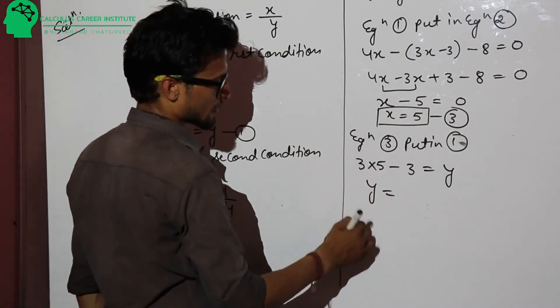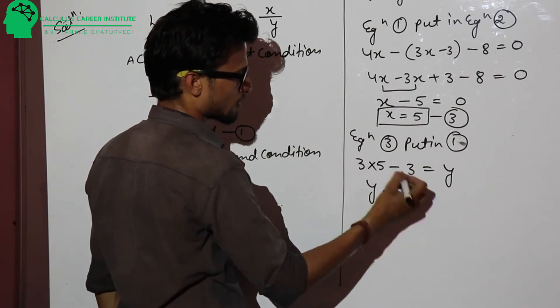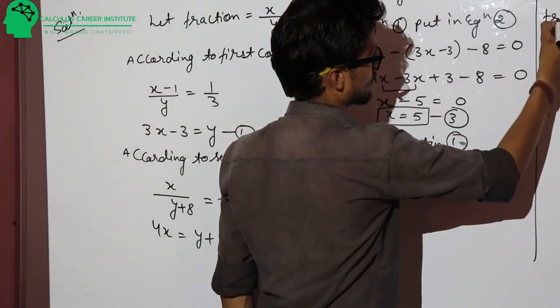So, y is equal to 15 minus 3. 15 minus 3 is equal to 12. Therefore,